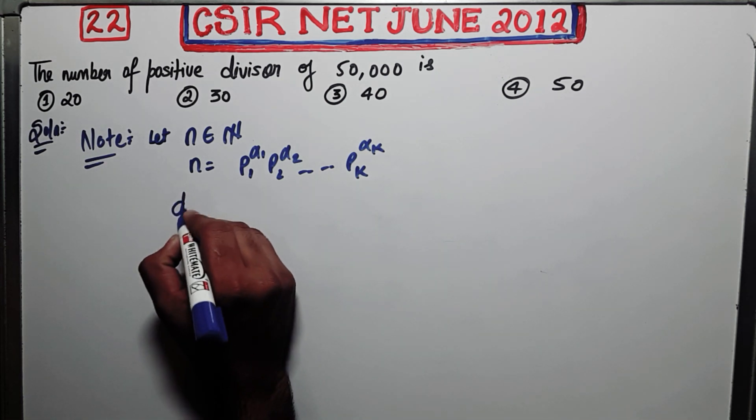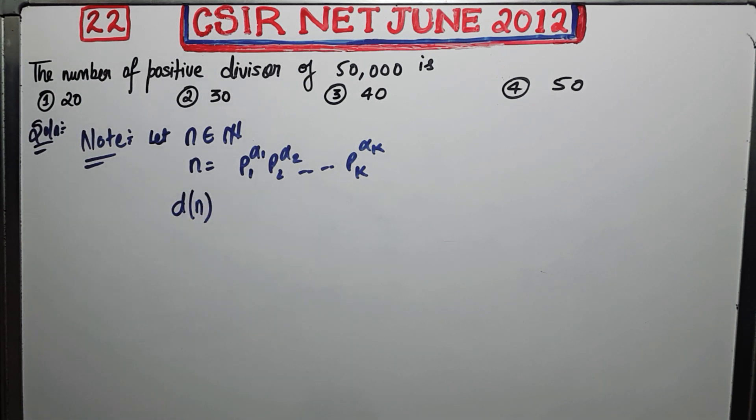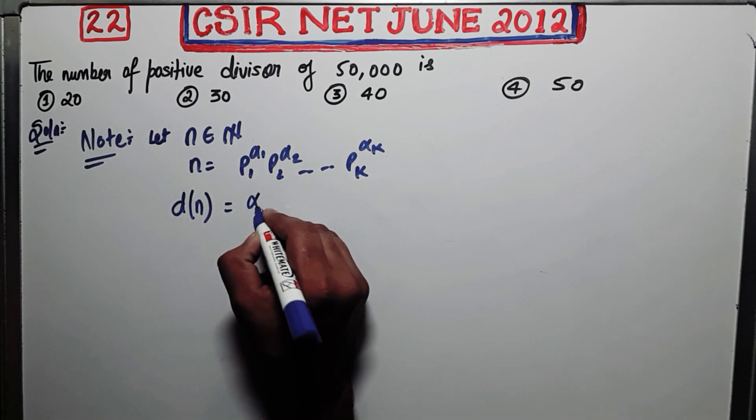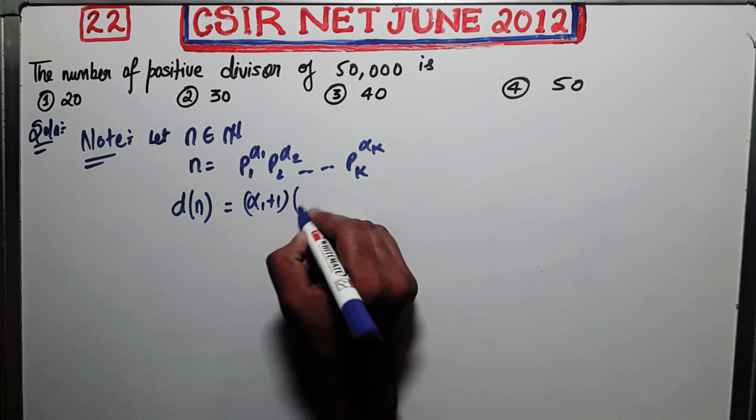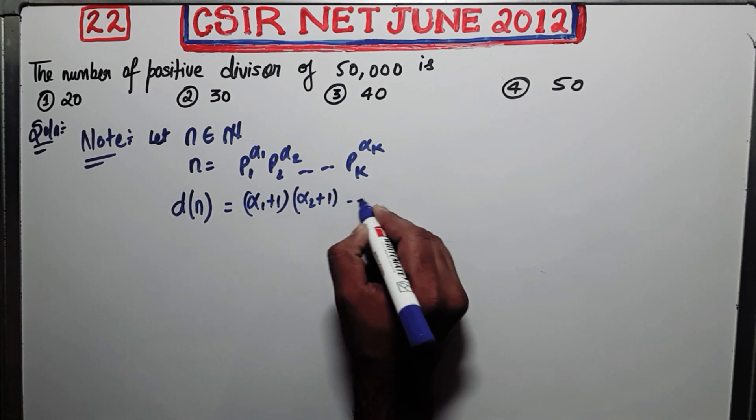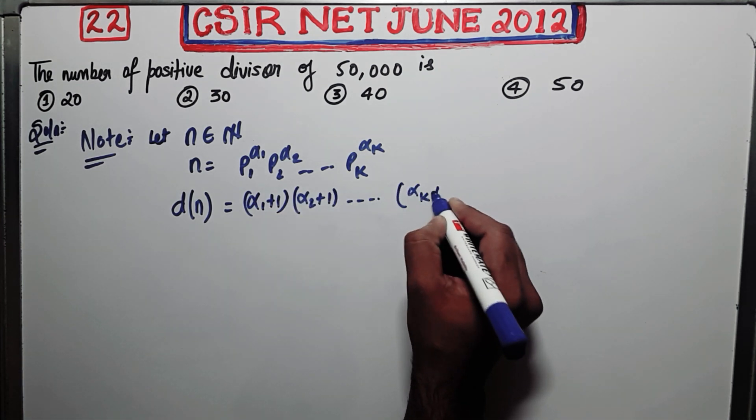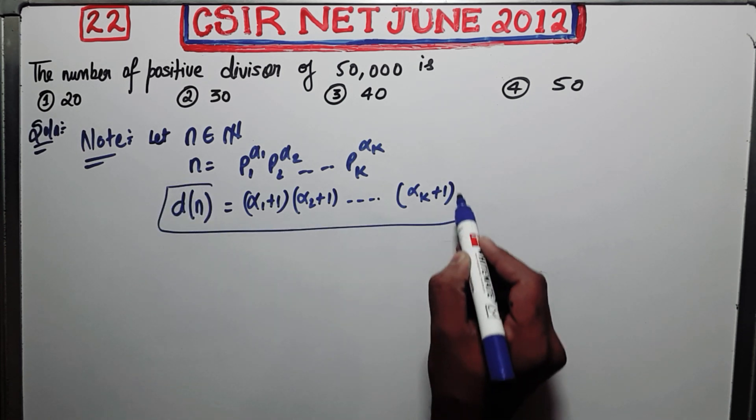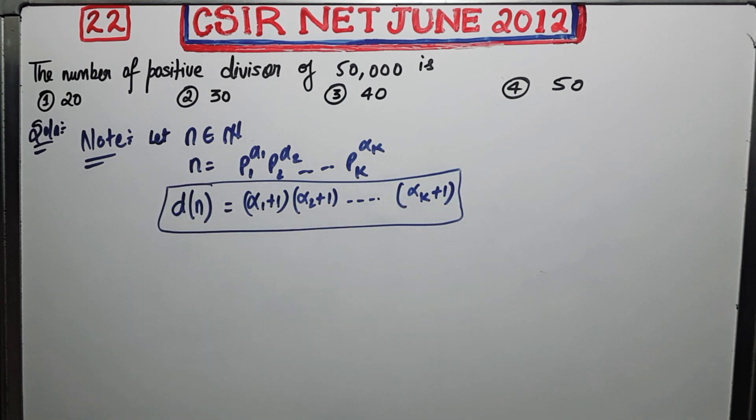So if D denotes the number of divisors, then D(n) is given by (α1+1)(α2+1)...(αK+1). So this is the formula for the number of positive divisors.